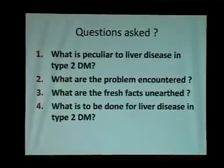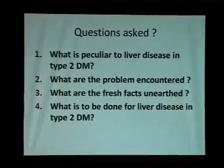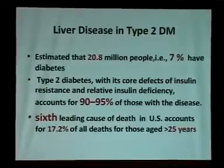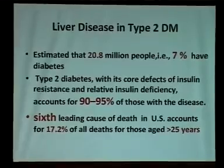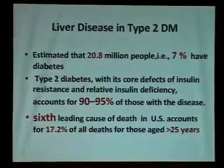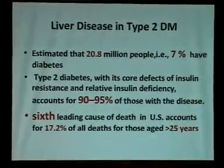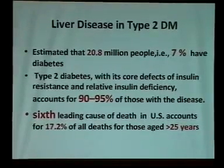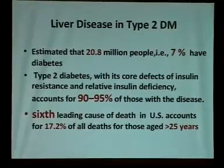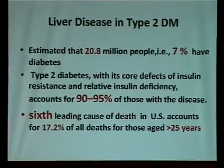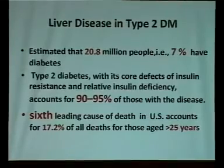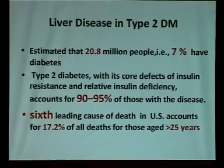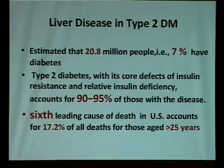What are the problems encountered, the new facts, and what is to be done for liver disease in type 2 diabetes? This is the magnitude of the problem: 7% of patients with liver disease have diabetes — that is around 20.8 million people. These are Western data. And 90 to 95% of this disease, the pathophysiology is insulin resistance and hyperinsulinemia that leads to liver disease. This is the sixth leading cause of death in the US.